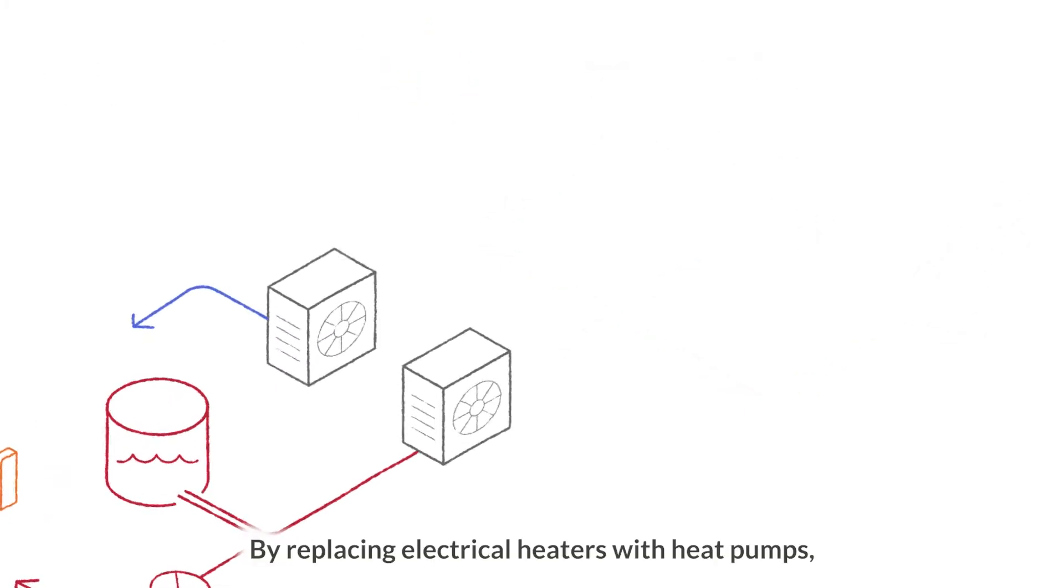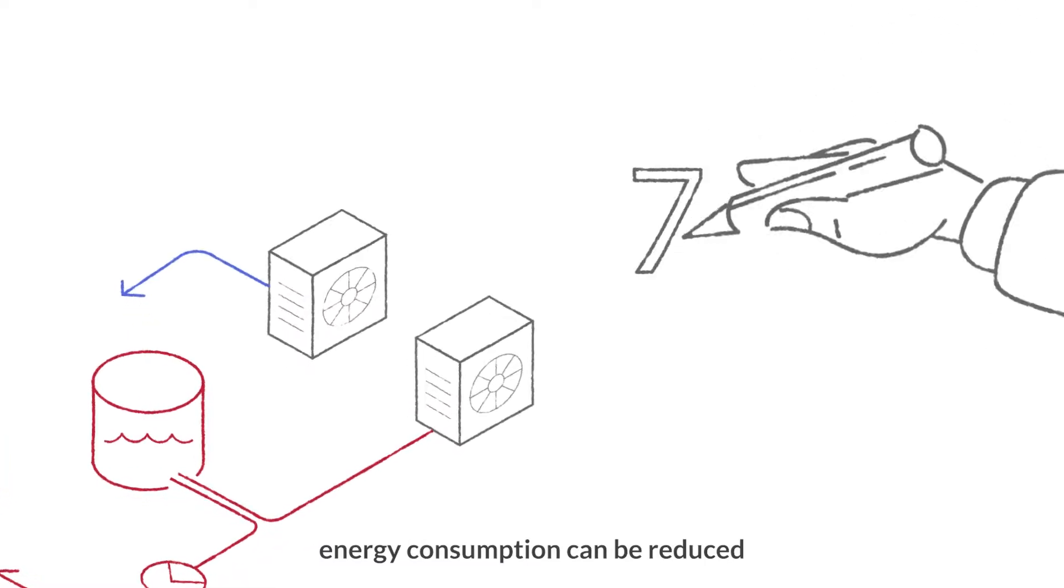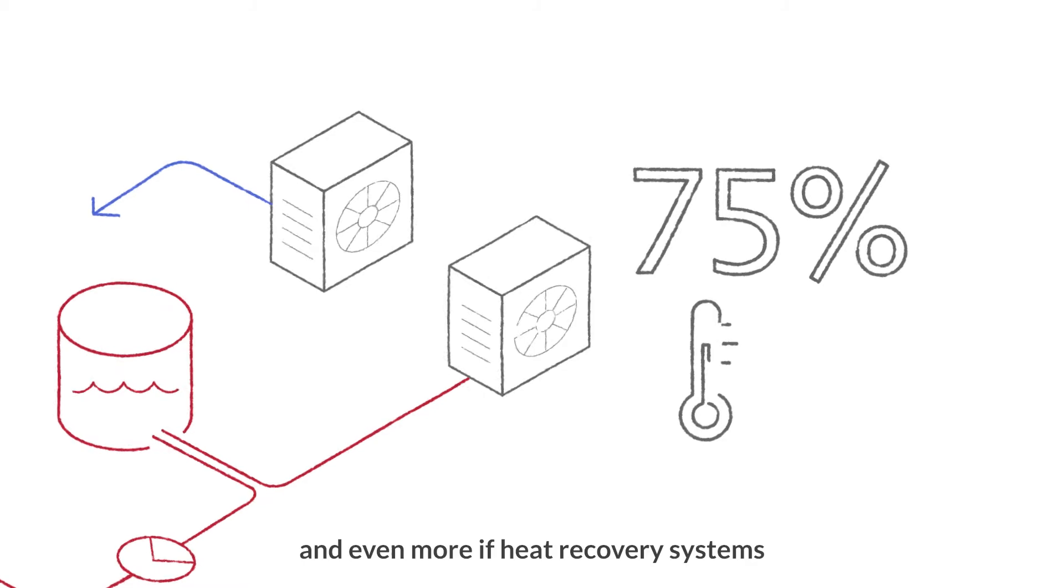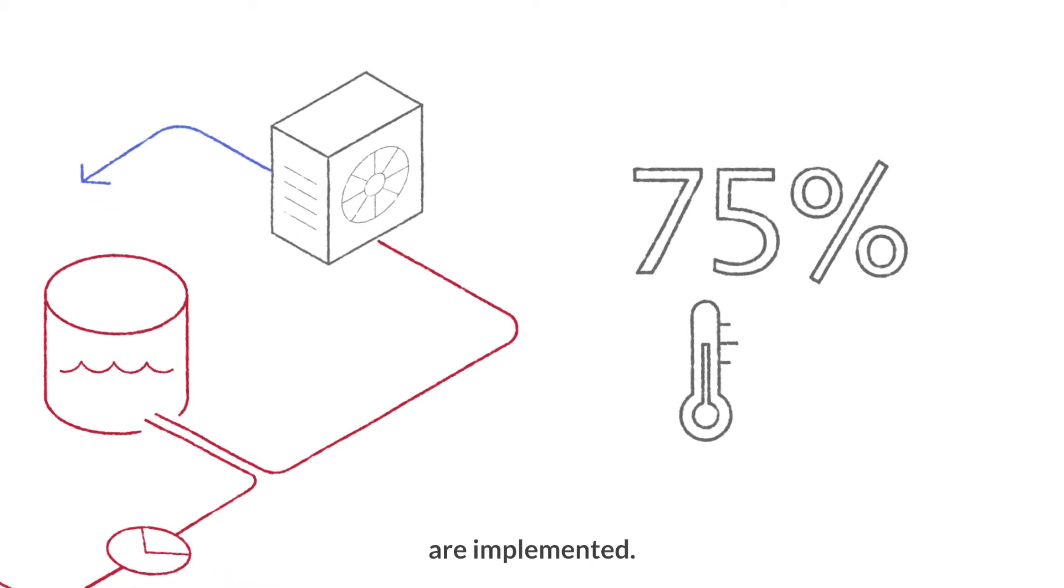By replacing electrical heaters with heat pumps, energy consumption can be reduced by up to 75% and even more if heat recovery systems are implemented.